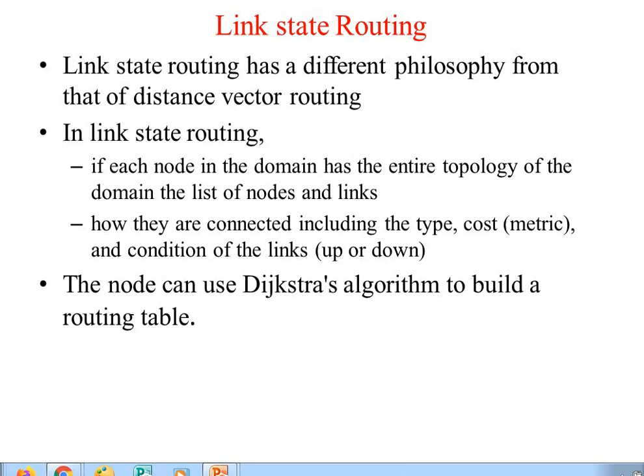The entire topology for each node is maintained, and the links are maintained accordingly. Each node has its own topology, and the topology includes links — meaning the neighboring nodes to which your node is connected. This includes the type, cost, and condition of the link: whether it is up (the next router is alive) or down (the next router is not working). The shortest path algorithm, specifically Dijkstra's algorithm, is utilized for this purpose.